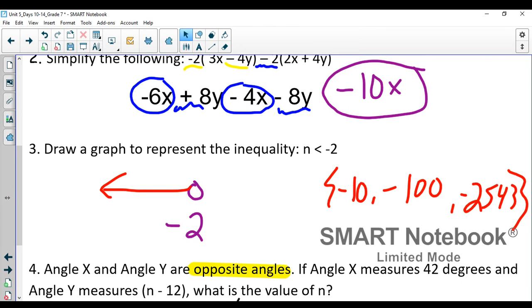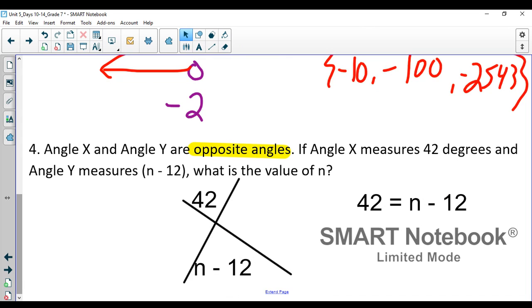Number four, the final problem, it says angle X and Y are opposite angles. Opposite angles or vertical angles are congruent. They are equal to each other, which means when I draw this, that this 42 degree angle and this angle n minus 12 are equal to each other. So if I need to solve for that variable, that's my equation. This angle 42 is equal to this angle n minus 12.